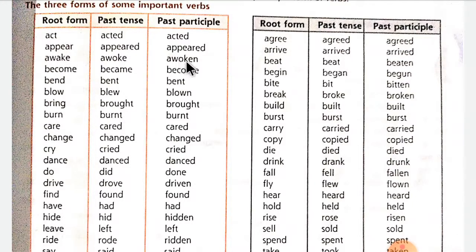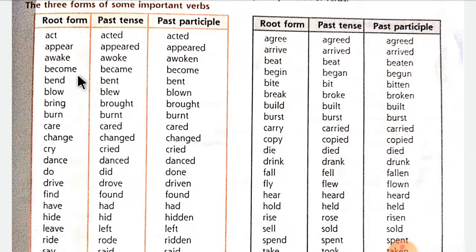Awake — awoken. You should know the Hindi meaning of these words. Act means 'kaam karna' (work). Appear — appeared. Awake means 'jagna' (to wake up) — awoken. Become — become. Bend — bent — bent. Blow means 'hawa chalna' (wind blowing).